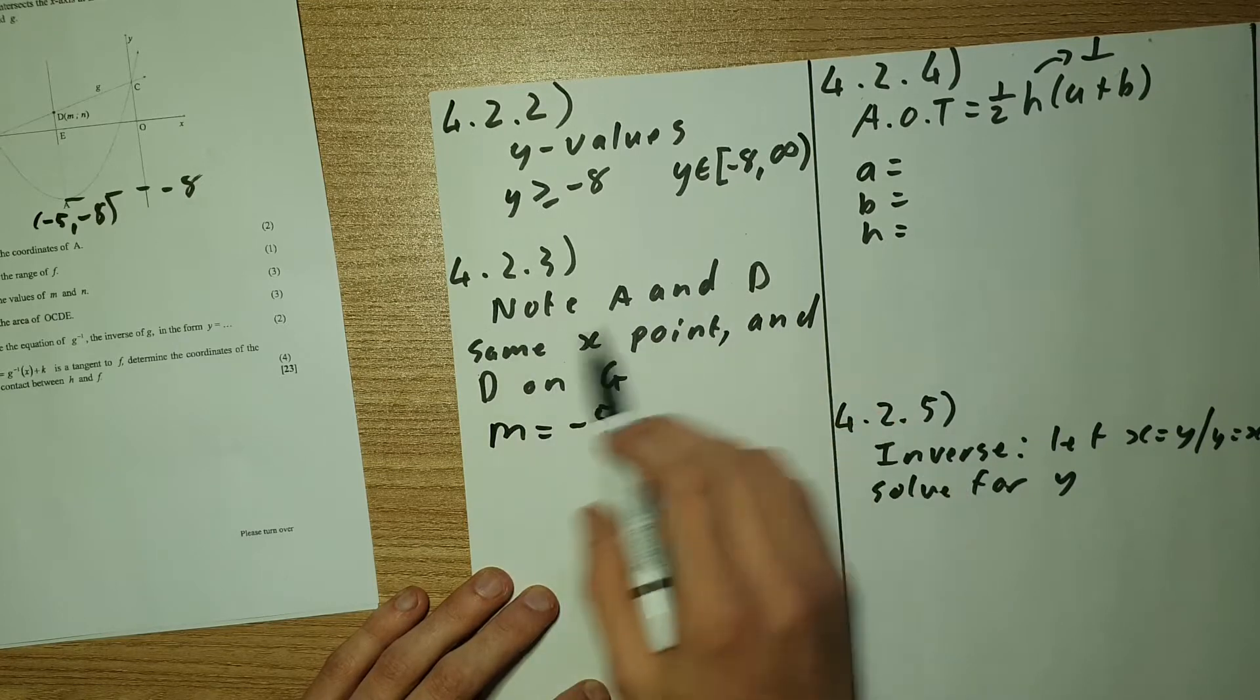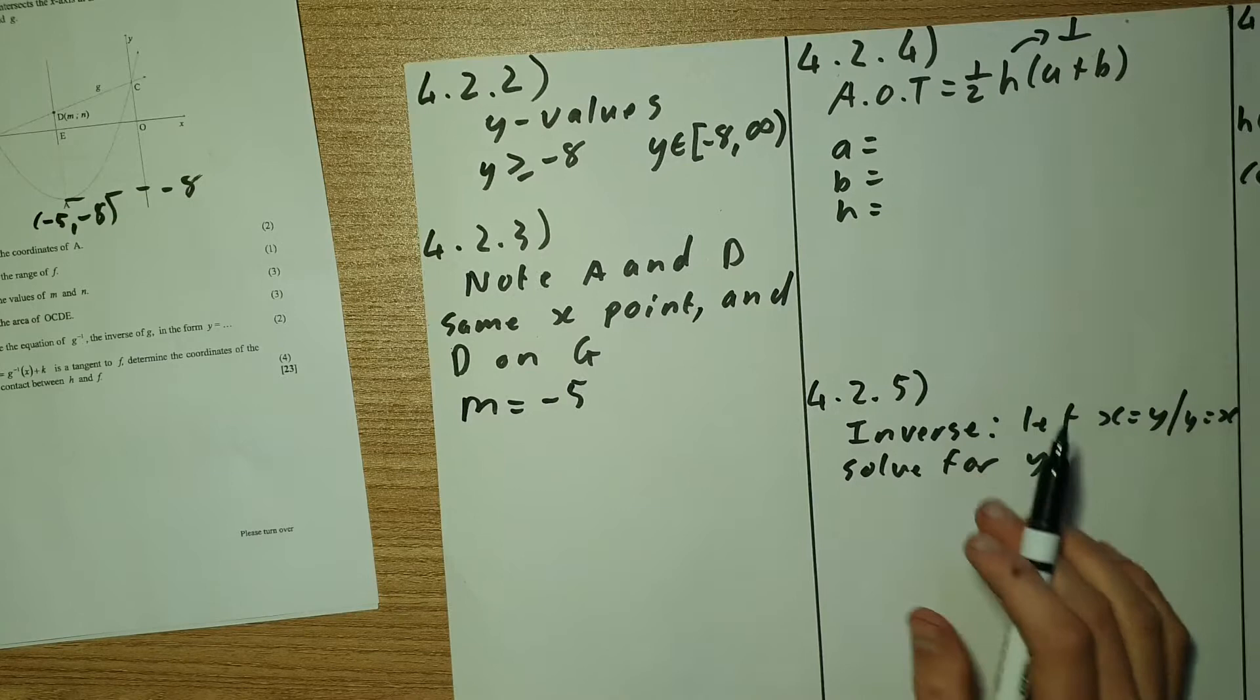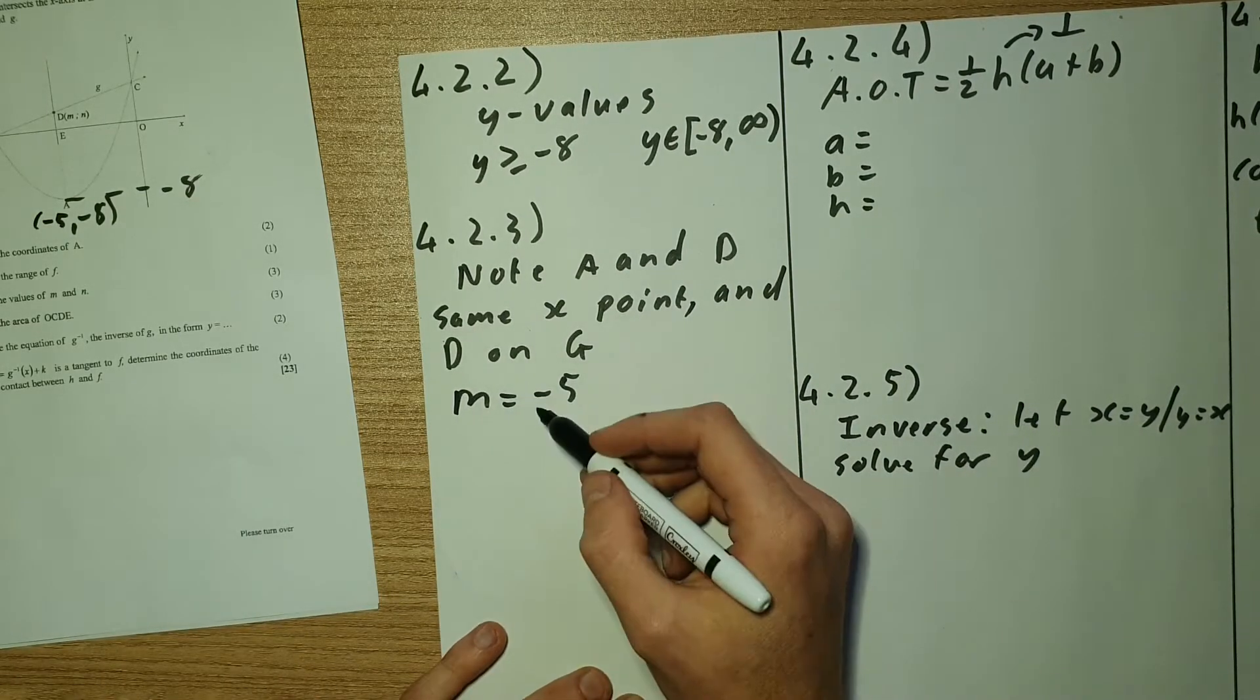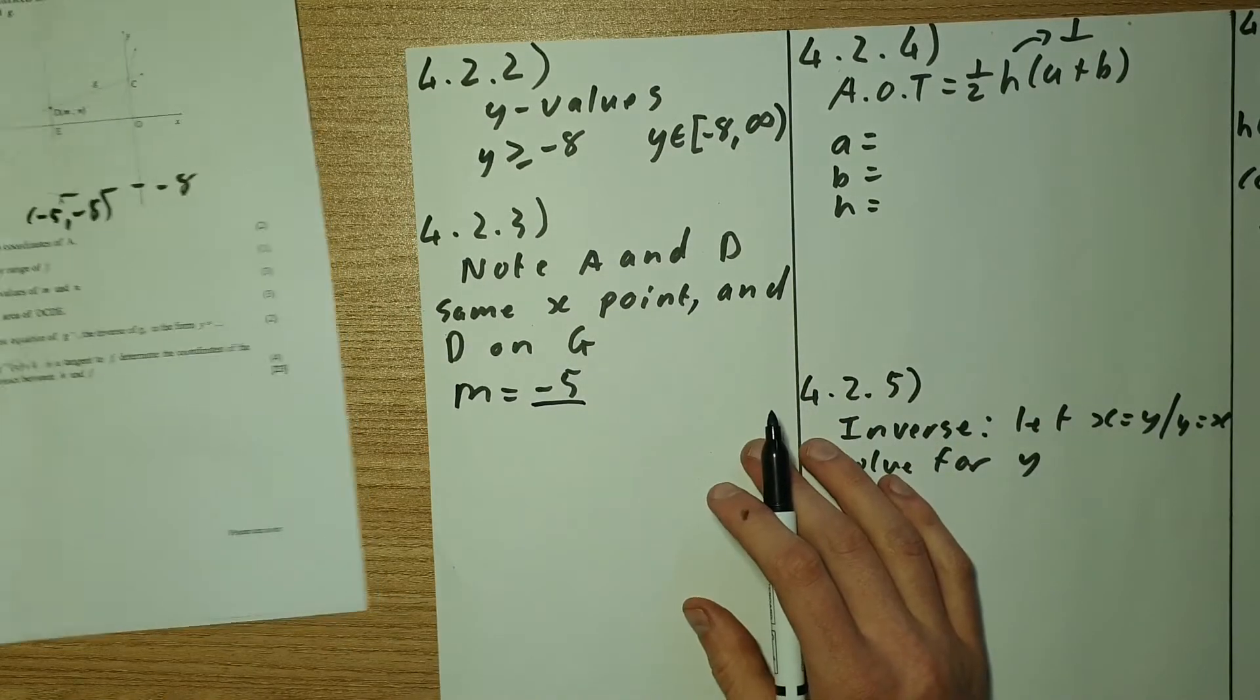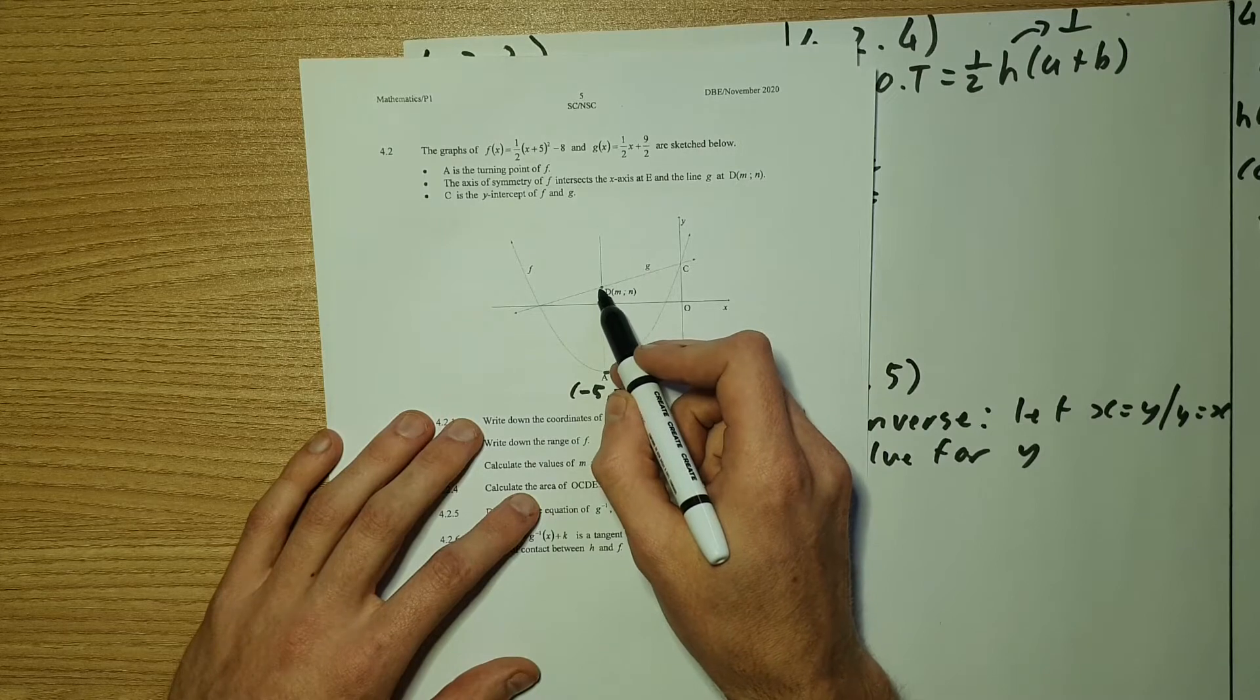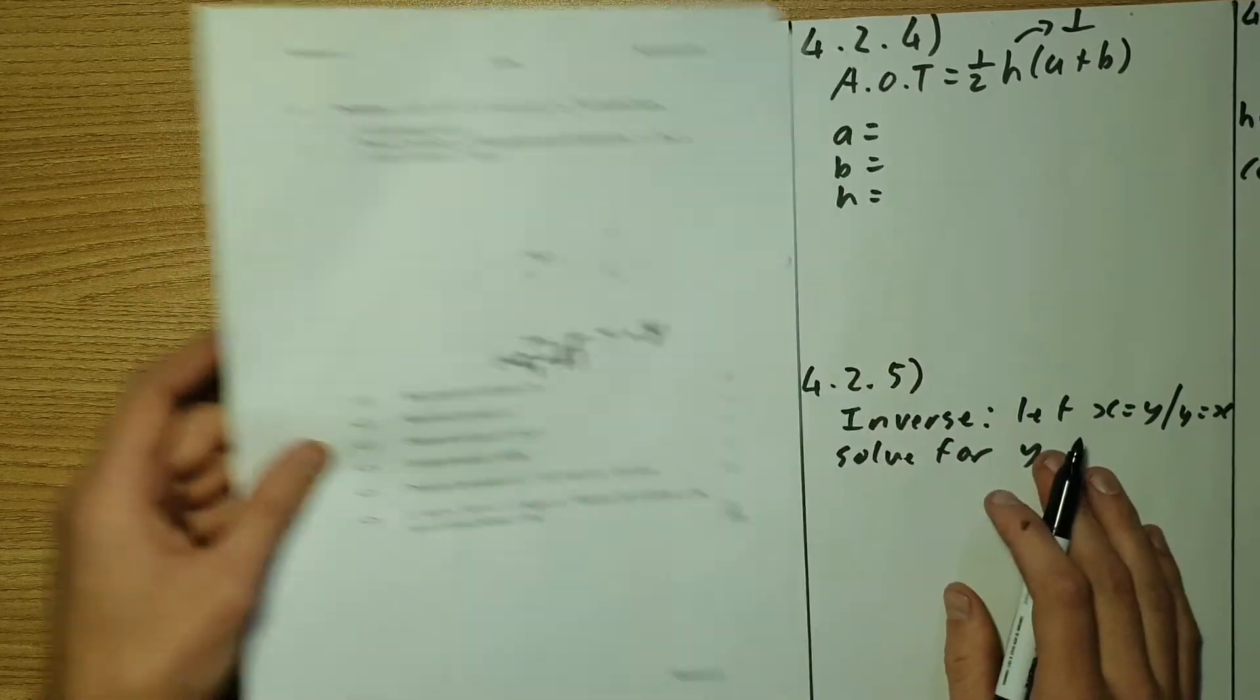I've stated here, note that a and d share the same x point and d lies on g. So now let's find the missing y value. All we have to do is substitute my x point into the function g of x, since n and m sit on the line g, and we'll find our end point.